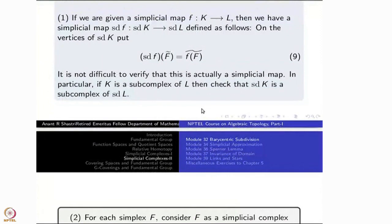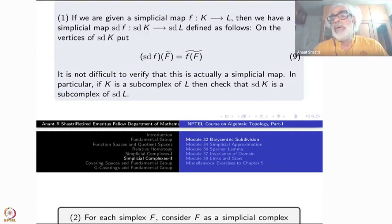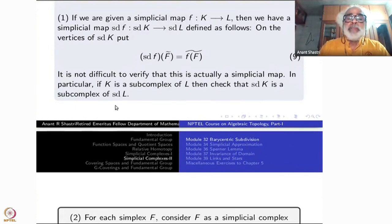In particular, if K is a subcomplex of L, take the inclusion map — that is a simplicial map. That will give you sd of that inclusion, which will automatically be an inclusion. So sd(K) will become a subcomplex of sd(L) if K is a subcomplex of L.